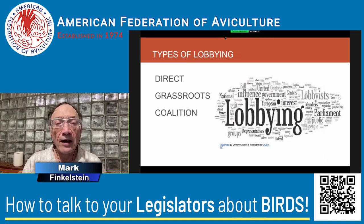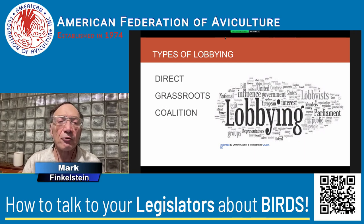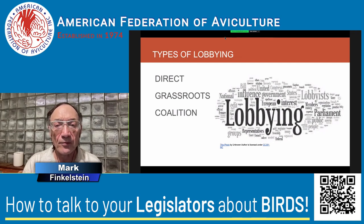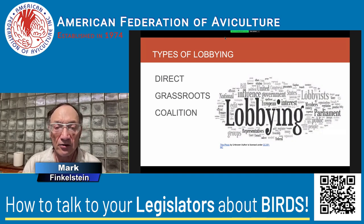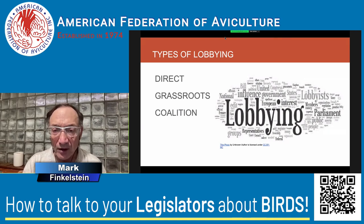There are three kinds of lobbying. Direct, where you actually go speak to a representative. Grassroots, where you talk to your friends and have them speak to the representatives — and this is what we're doing here, getting the help of all of you to go talk to your representatives about our interests in parrots. And coalition lobbying, where we join with other groups. For example, if we wanted to lobby for cages of the right size, there's wire mesh, concrete, fittings, and all sorts of other interests — coalition lobbying is where we'd all get together and present our case.